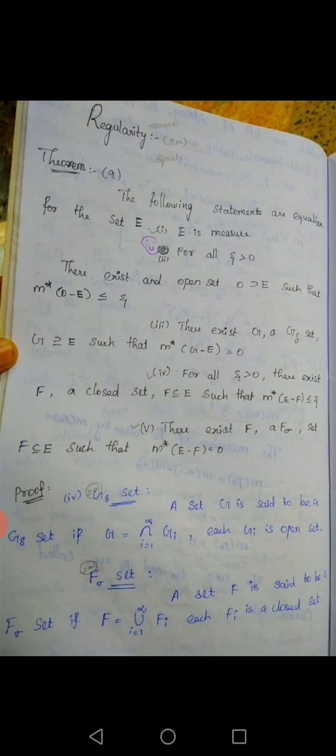Proof. First implies second: E is measurable. For all epsilon greater than zero, all values are non-negative. There exists an open set O with E subset O. The outer measure of O minus E is less than or equal to epsilon. Third: M-star of G minus E equals zero.